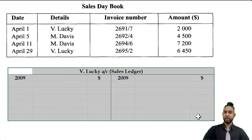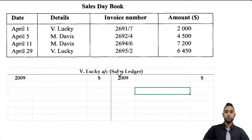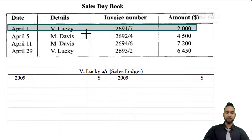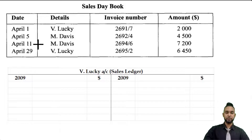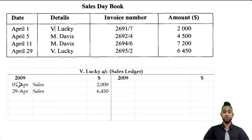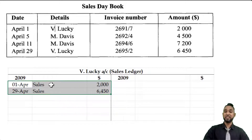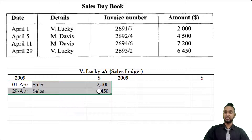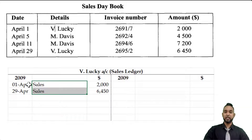V Lucky's account is a personal account of a debtor found in the sales ledger. On the 1st there is a credit sale to V Lucky of $2,000, and on the 29th another credit sale of $6,450. Both go on the debit side of V Lucky's account — because when you make a credit sale to someone they end up owing you money, which is an asset to you, and when an asset increases you debit the asset account. The details column shows the word 'sales,' but this is not a debit to the sales account; it is a debit to V Lucky's account, and 'sales' indicates the other account affected by the transaction.